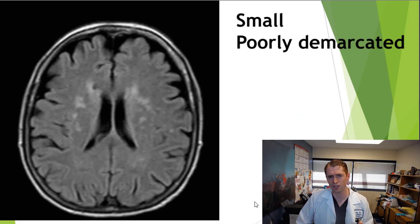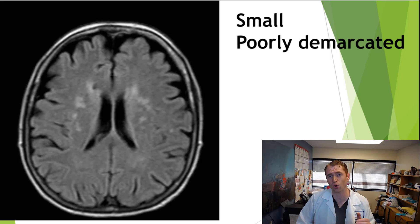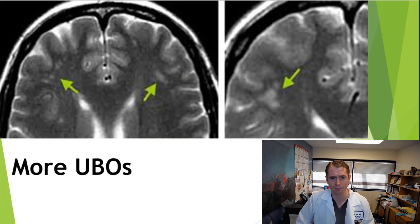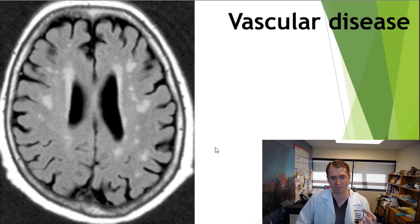Just because lesions are not typical of MS does not mean they're minor or insignificant — they can actually be quite impressive on MRI. You can see quite a few patchy, indistinct lesions, very patchy and poorly demarcated. Here's another example in the frontal lobes almost becoming confluent. Here you can see quite impressive vascular disease that can involve the periventricular area a little bit, with frontal lateral ventricle horn capping, typical of vascular disease.